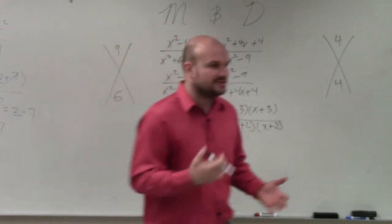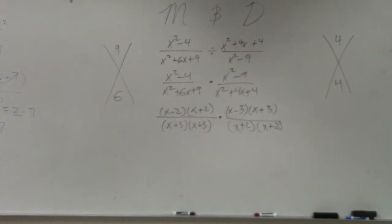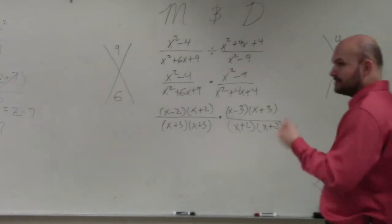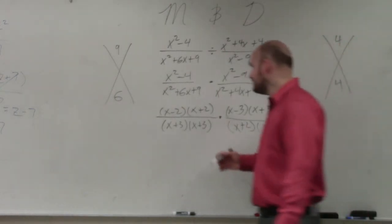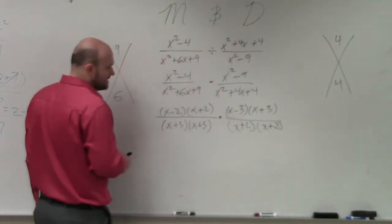So basically, ladies and gentlemen, there's kind of two steps when we're doing division. First, rewrite it as a multiplication problem. Step number two, factor everything. Then, once you guys get everything factored, now we just look for what can we divide out. What is the same in the numerator that's the same in the denominator.